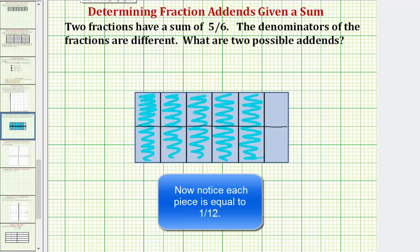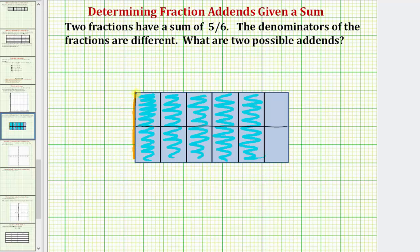So now because we're looking for two fractions that have a sum of five-sixths, we could let these pieces represent the first fraction, and these pieces represent the second fraction.